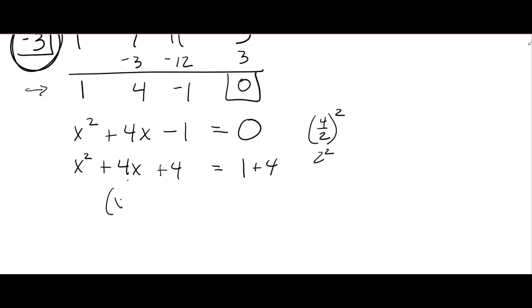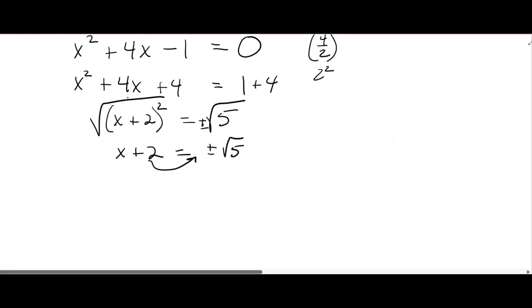And you get x plus 2 squared equals 5. Take the square root of both sides. Don't forget the plus or minus. x plus 2 equals plus or minus the square root of 5.